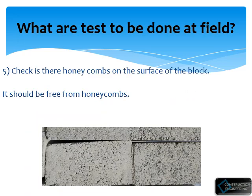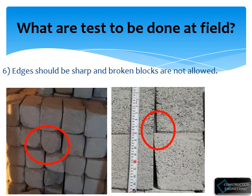Fifth, the blocks should be free from honeycombs — there should not be any kind of honeycombs. Sixth, the edges should be sharp and broken blocks are not allowed. If we use broken blocks it encourages greater mortar thickness and increases the chance of cracks in the blockwork and plaster.